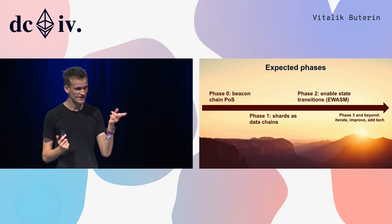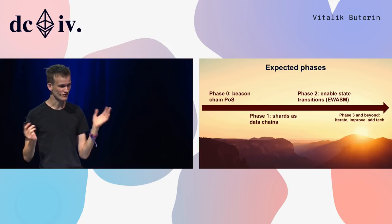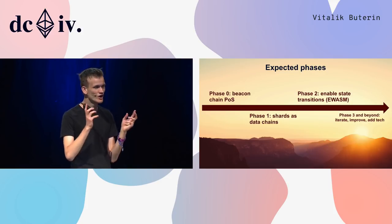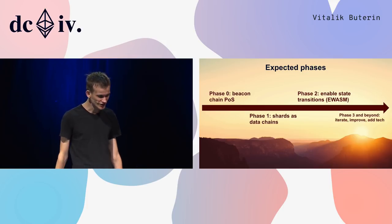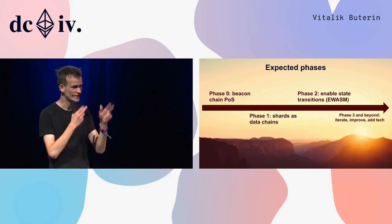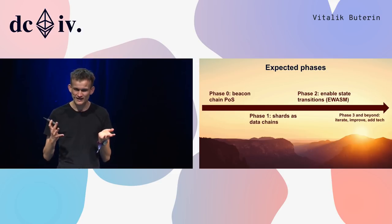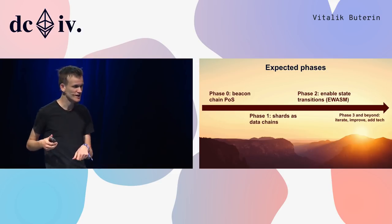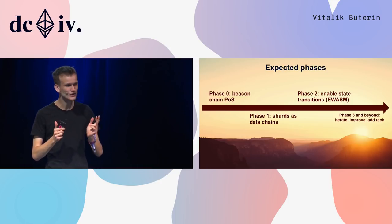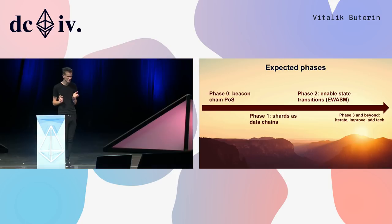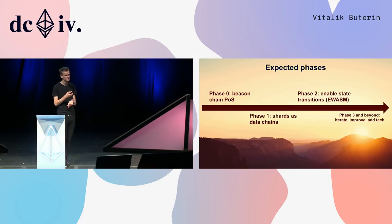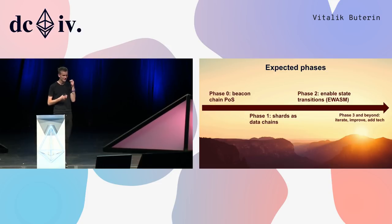Expected phases: Phase zero is beacon chain proof of stake. The blockchain doesn't hold any application information — it's kind of like a dummy chain. Validators execute the proof of stake algorithm. It's halfway between a testnet and a mainnet: you can stake real ether and earn real rewards, but it doesn't have applications, so if it breaks, people hopefully won't cry too badly — not as badly as when the Shanghai DOS attacks made everyone's ICOs go slowly.